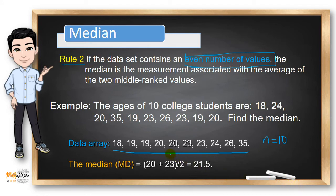So all we need to do is to identify the two middle rank values. In this case, it's 20 and 23. So getting the average of this, or 20 plus 23 divided by 2, will give us a median of 21.5.